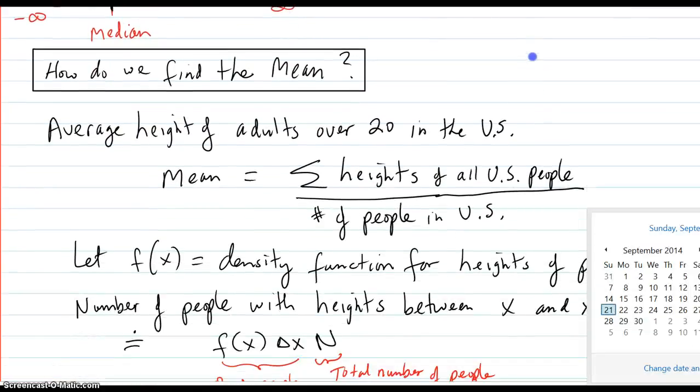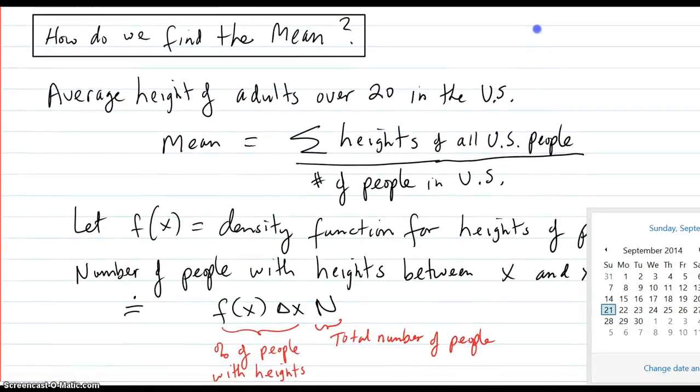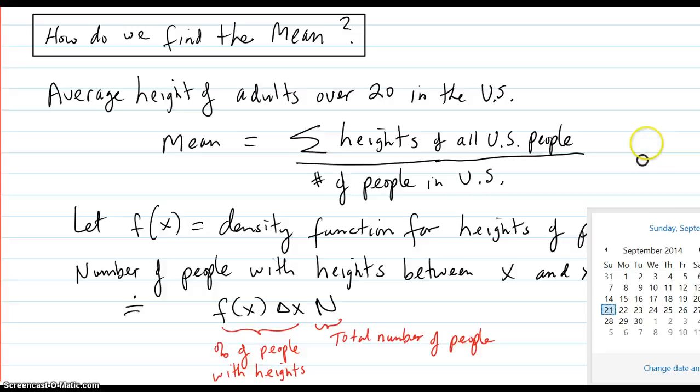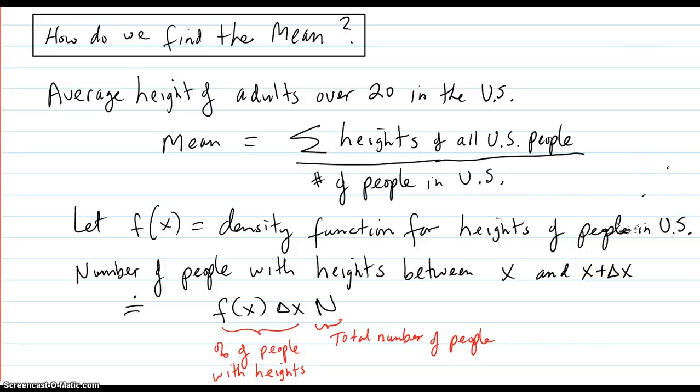Now, how do we find the mean? Let's just say there's a lot of values there.